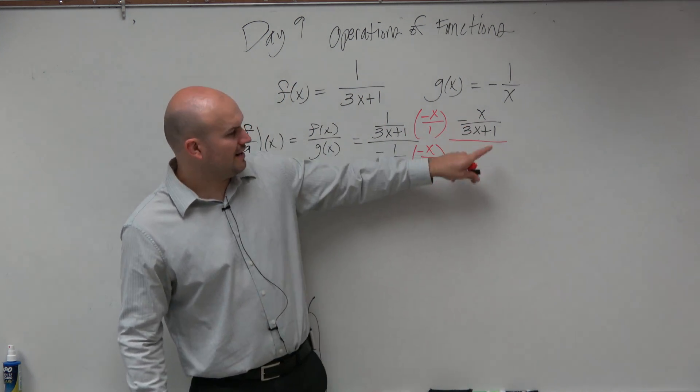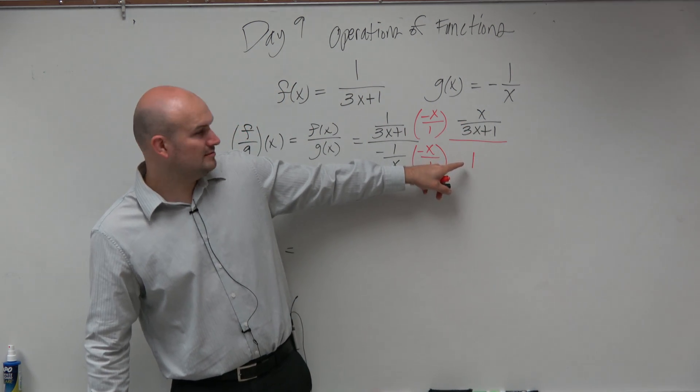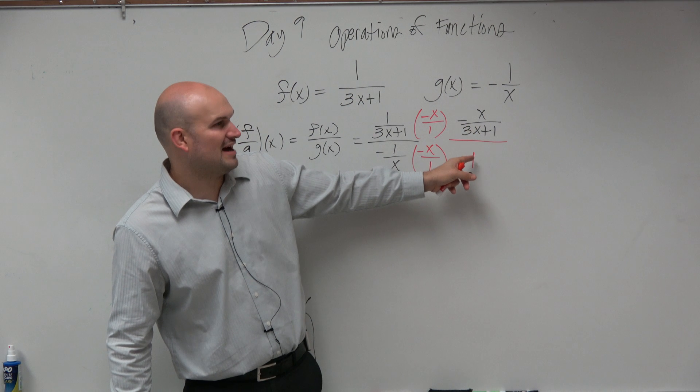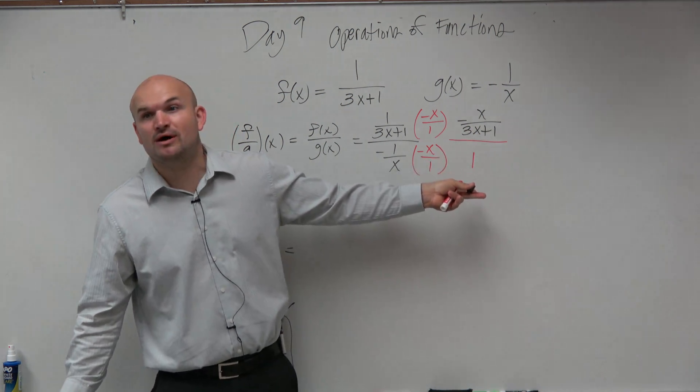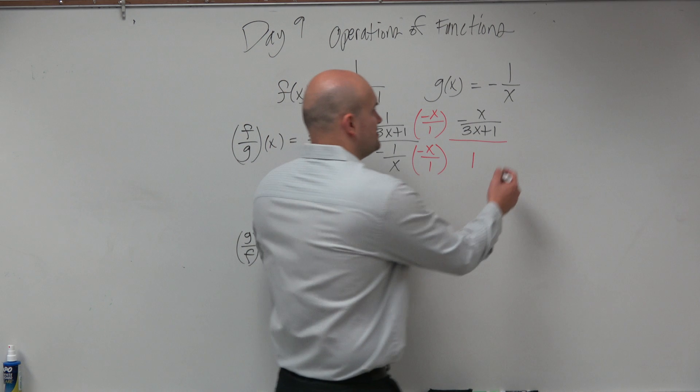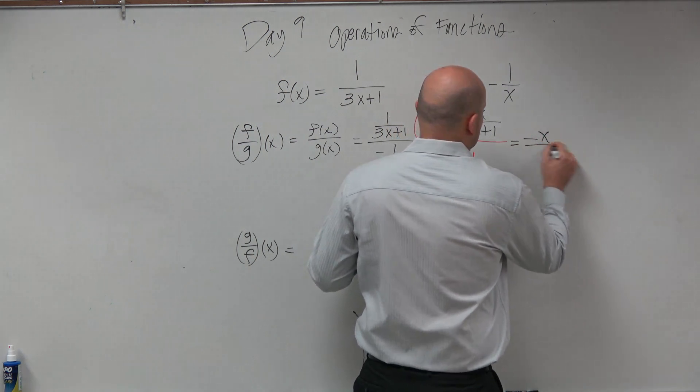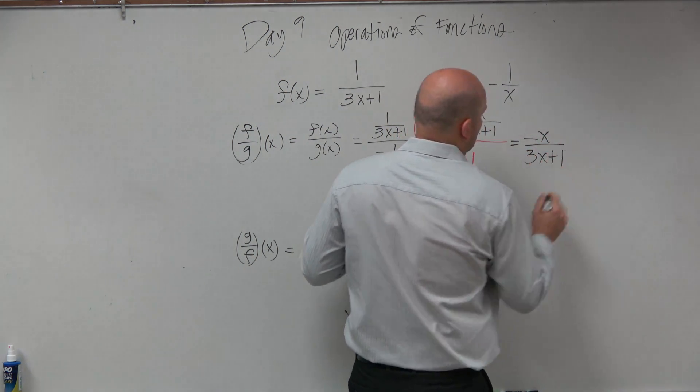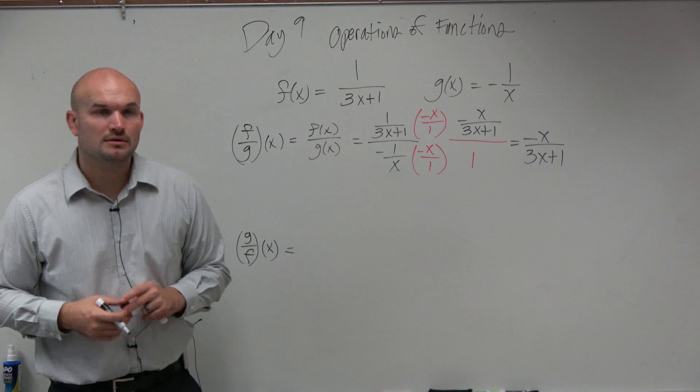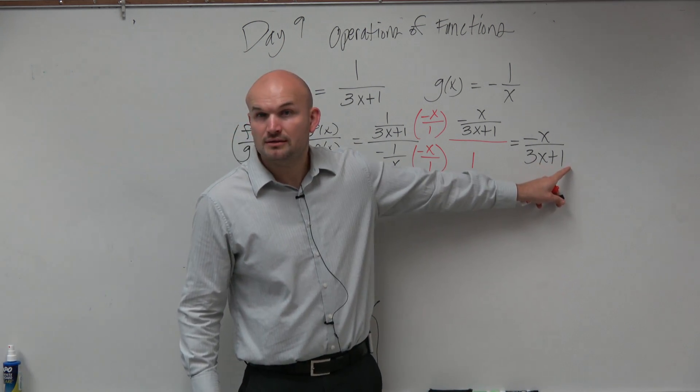Now, do you guys agree with me that I really don't need to write dividing by 1? Because negative x over 3x plus 1 divide, we don't really need to write divided by 1 one more time, right? You guys would agree with me, I can just kind of say this is equal to negative x over 3x plus 1.